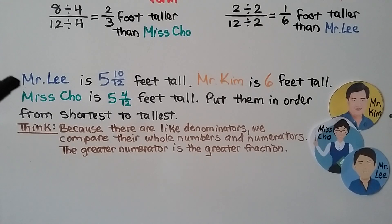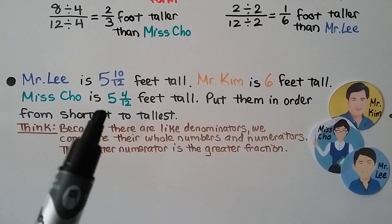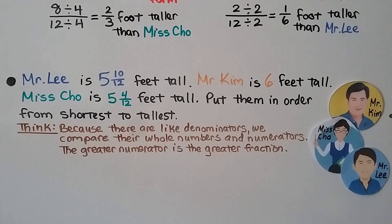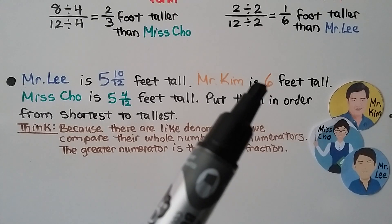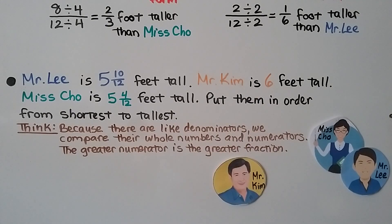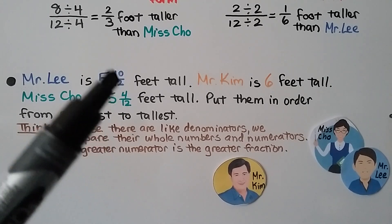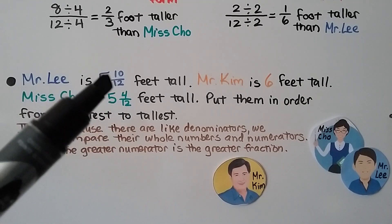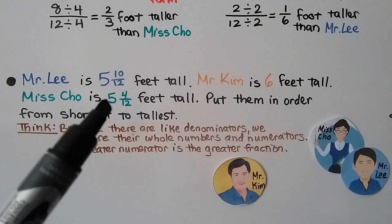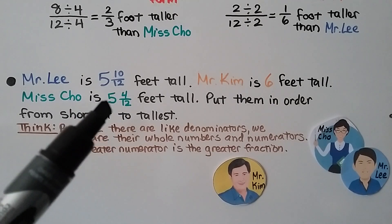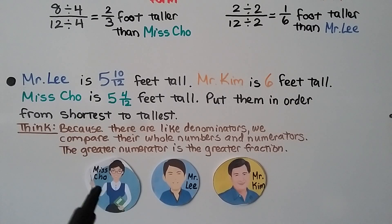Mr. Lee is 5 and 10 twelfths feet tall, Mr. Kim is 6 feet tall, and Ms. Cho is 5 and 4 twelfths feet tall — put them in order from shortest to tallest. We look at their whole numbers: we have 5 and 5 for Lee and Cho, while Mr. Kim is 6, so Mr. Kim is the tallest and goes on the right. Mr. Lee and Ms. Cho have the same whole number, so we look at the numerators — same denominator — and the greater numerator is the greater fraction. Ms. Cho is only 5 and 4 twelfths, so she's the shortest on the left, and Mr. Lee is in the middle.